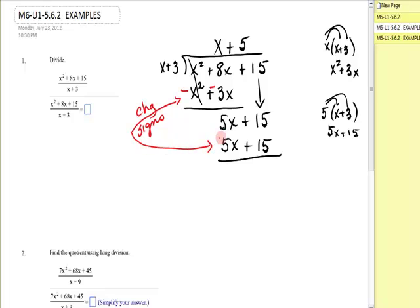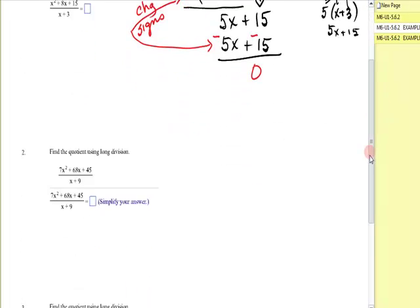Again, I'm going to change signs, change, change, and you get a remainder this time of 0. Here's your answer, x plus 5. We just divided the polynomials.